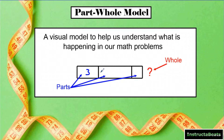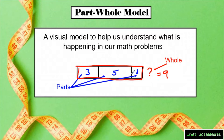For instance, if I make this part three, this next part would be a little bit bigger — maybe five — and this one is smaller than the three, so it could be maybe a one. When you add all those parts together, your whole entire tape diagram or part-whole model would be equal to nine. With a part-whole model you're able to show the parts and how they're separate, but when you add them together it makes the whole.